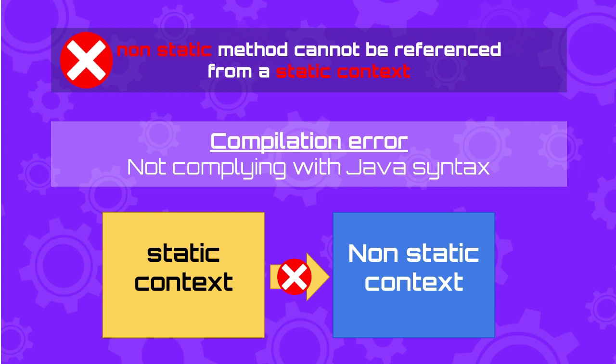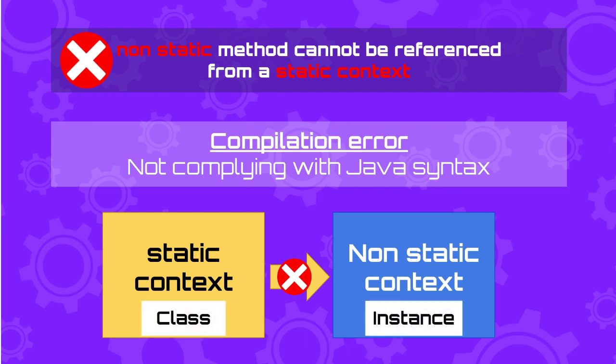Another way to say this is that you are trying to call a method that belongs to the instance or object from the class context. To understand this a bit better, let's see what the static keyword means in Java.